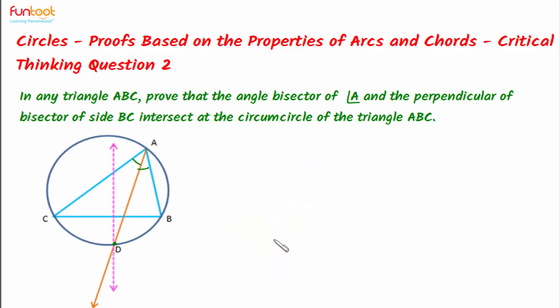Let's discuss the approach for doing this. We can have three approaches. First: assume the perpendicular bisector and angle bisector intersect at point D and the circumcircle passes through D. Second: assume D is a point on the circle through which the perpendicular bisector passes, then show the angle bisector also passes through D. Third: assume D lies on the circle and the angle bisector passes through D, then prove the perpendicular bisector of BC also passes through D. The third approach is most convenient, so we will use it.